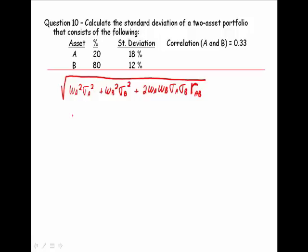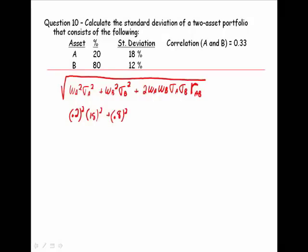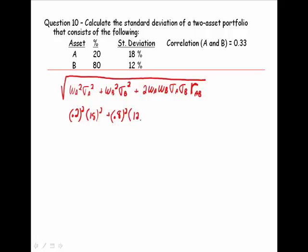The weight in asset A is 0.2, so I'll say 0.2 squared. The standard deviation is 18, so I'll use 18 squared, plus the weight in asset B is 0.8 squared times its standard deviation, which is 12 percent squared.